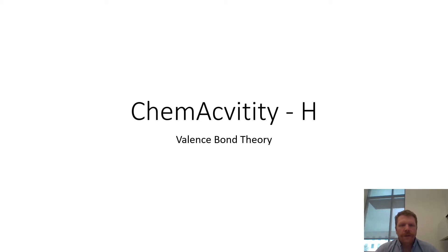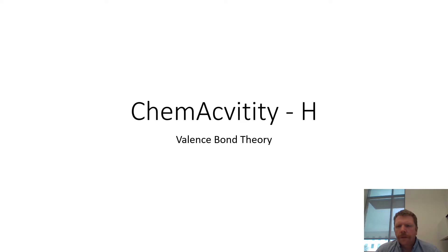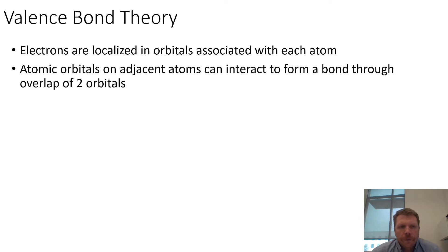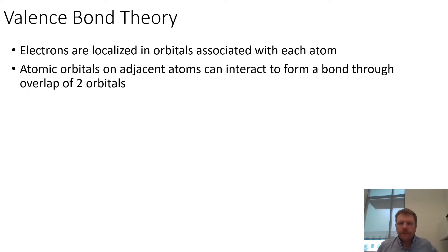Hey everybody, I wanted to do a brief video over this chem activity on valence bond theory and work through a couple of examples to try to illustrate these concepts. This is all about hybrid orbitals and formation of bonds between different atoms, and what constitutes a sigma bond and a pi bond. So let's go ahead and get started. Valence bond theory states that electrons are localized in orbitals associated with each atom, and atomic orbitals on adjacent atoms can interact to form a bond through the overlap of two orbitals.